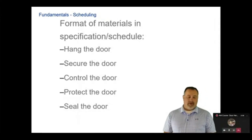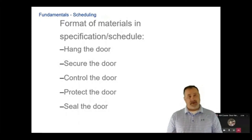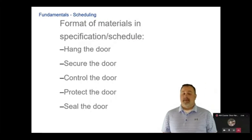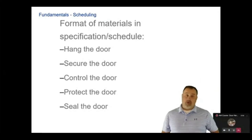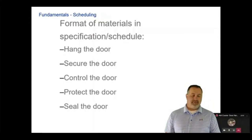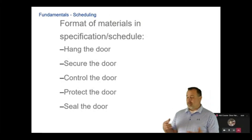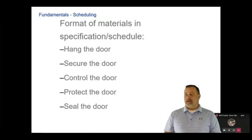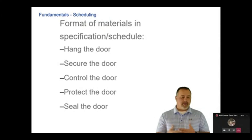Once you've hung the door, you then need to secure it. You do that by way of an exit device, a lock set, or flush bolts. Then you have to control the door. If the opening is fire rated, or even if you want the door to close at all times, you have to use a door closer — or it could also be an auto operator. Spring hinges are another way to control an opening, though rarely used.